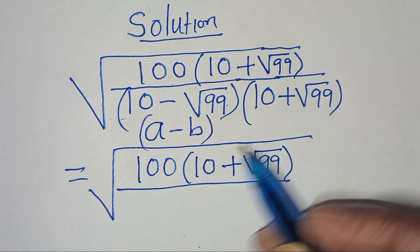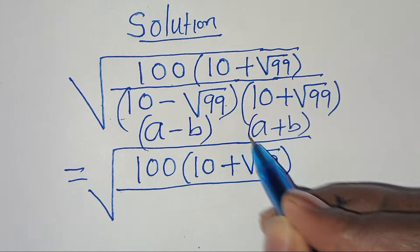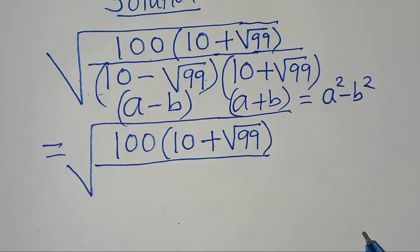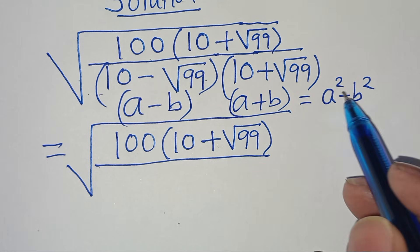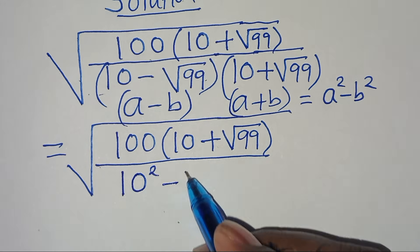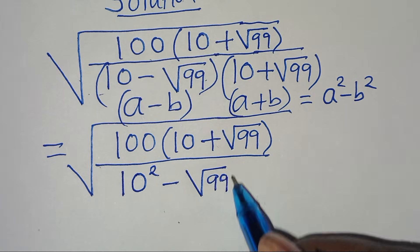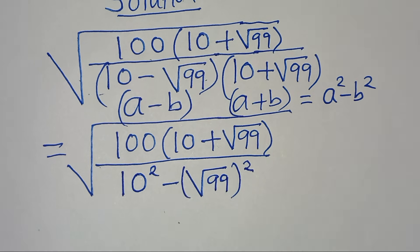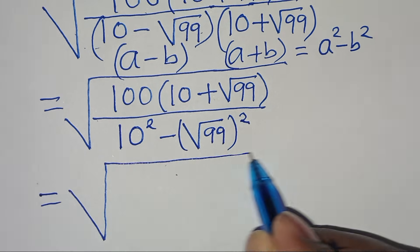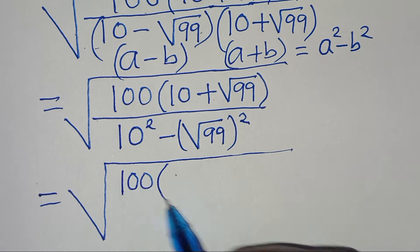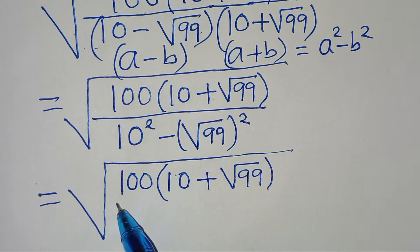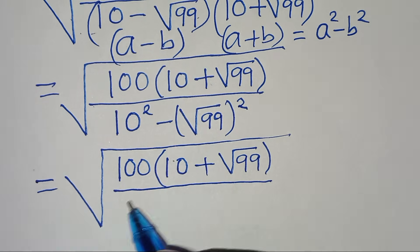The denominator is in the form of (a minus b)(a plus b), which we can express as a squared minus b squared — the difference of two perfect squares. Applying this property, the denominator becomes 10 squared minus square root of 99 raised to the power of 2. So we have square root of 100 multiplied by 10 plus square root of 99 in the numerator.